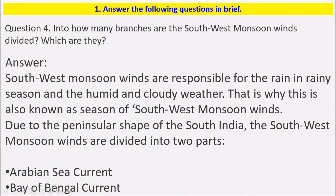Next: into how many branches are the southwest monsoon winds divided, and which are they? The southwest monsoon winds are responsible for the rain in the rainy season and the humid and cloudy weather; that is why this is also known as the season of southwest monsoon winds. Due to the peninsular shape of south India, the southwest monsoon winds are divided into two parts: the Arabian Sea current and the Bay of Bengal current.